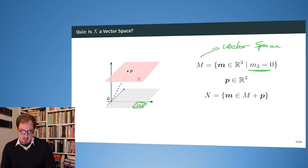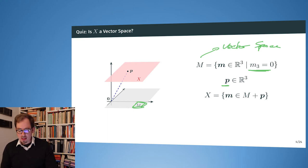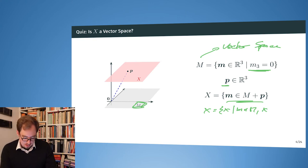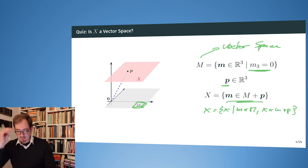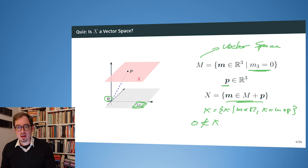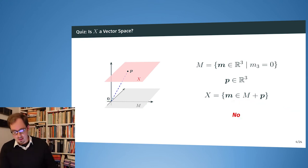But what we now do is translate this vector space. We have some vector p, and we look at all the elements of M with p added to each one. This can be written as: X is all vectors x such that there exists an m in M where x equals m plus p. Here we have to say that this set X is not a vector space, and we can see that very easily because the null vector is missing — zero is not an element of X — and therefore it is not a vector space. The axioms are not holding.